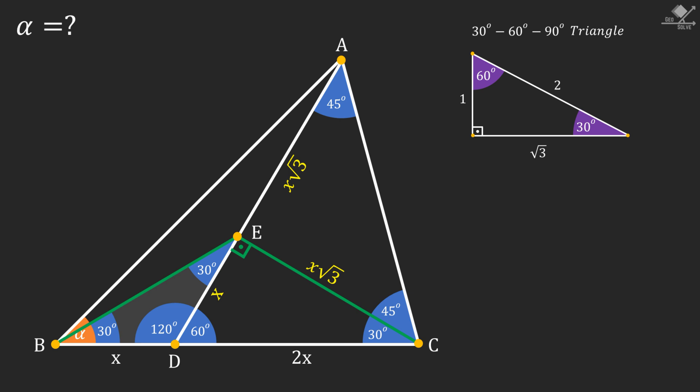In a 30-30-120-degree triangle, it can be shown that the side opposing 120-degree angle is root three times one of the equal sides. If we use this in our question, line segment BE will be X root three units.